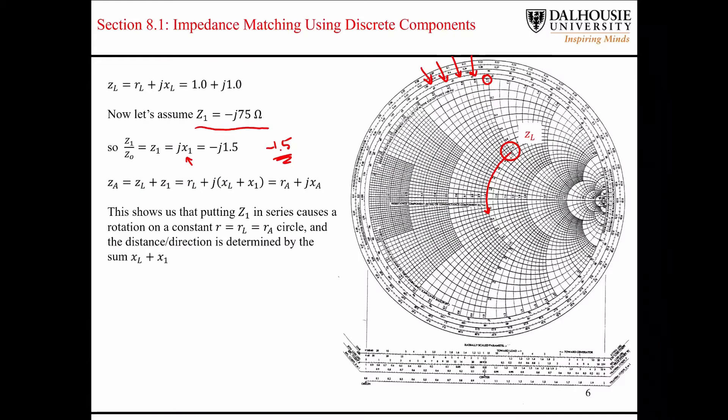So if we start at 1.0, and we subtract off 1.5, then that's going to leave us at negative 0.5. So the zero point is right here. Like I said, in the bottom half of the Smith chart,